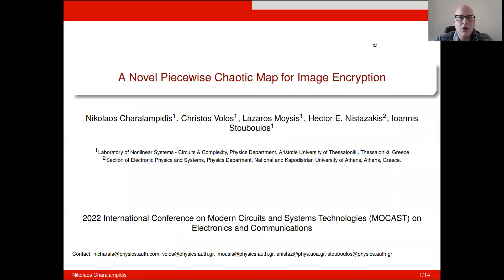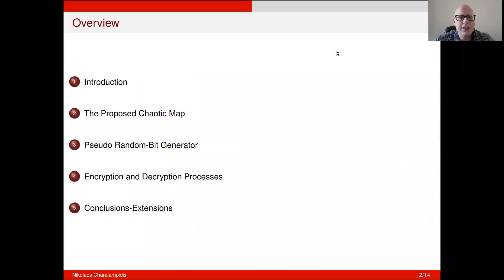Good morning, everyone. My name is Nicola Sorlambidis, and today I'm going to present to you a novel piecewise chaotic map for image encryption. First, we're going to start with an introduction, and then I'm going to show you the proposed chaotic map, which we use in order to create a random bit generator, and then how we use them to create encryption and decryption processes. Last, we're going to leave you with some conclusions and future extensions.